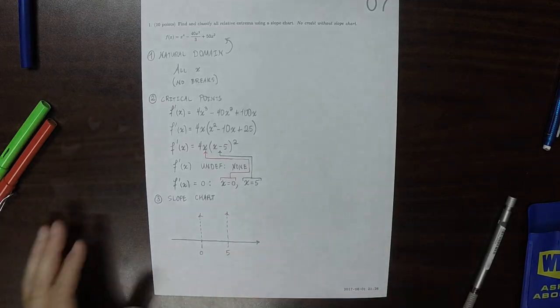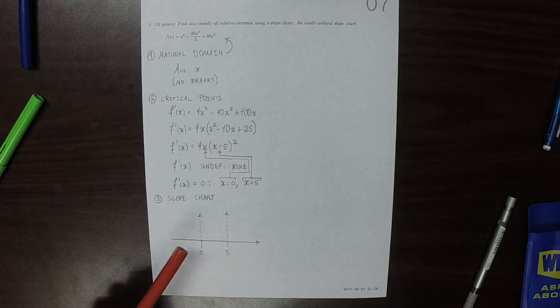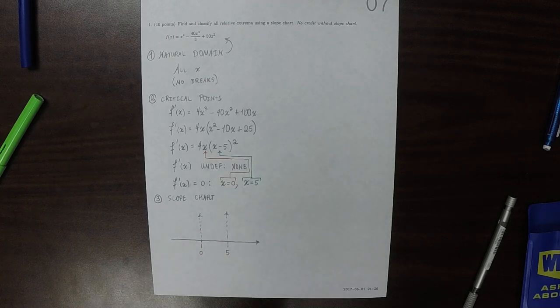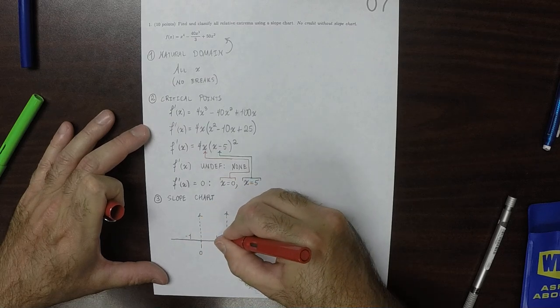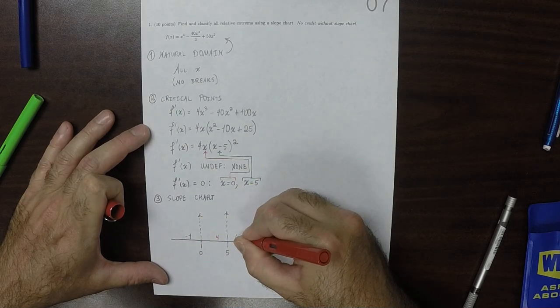And they were at zero and five. So now, between each fence post—these individual things I'm calling fence posts—let's select a number. So how about negative 1 in this region, 4 in this region, and 6 in this region.